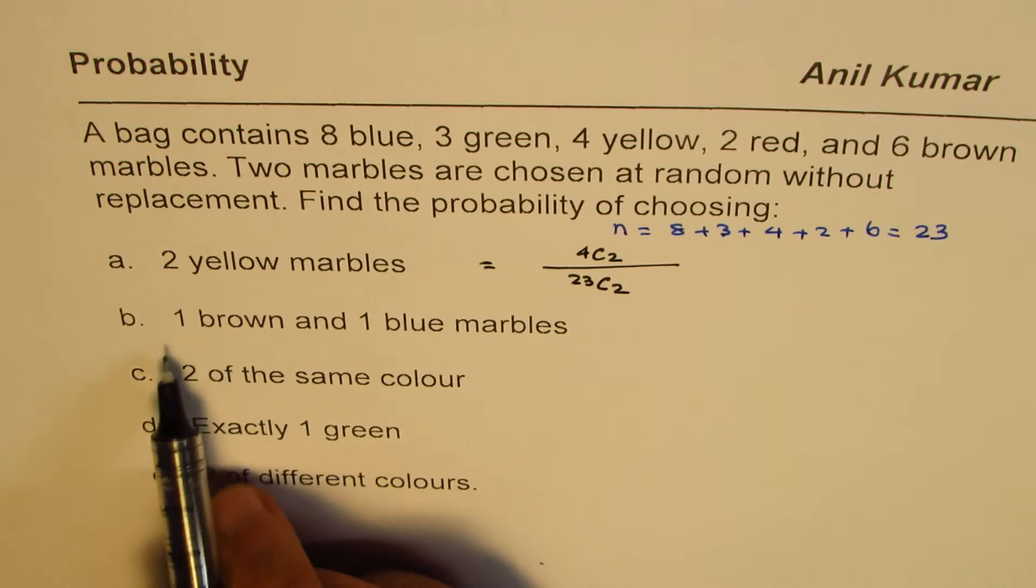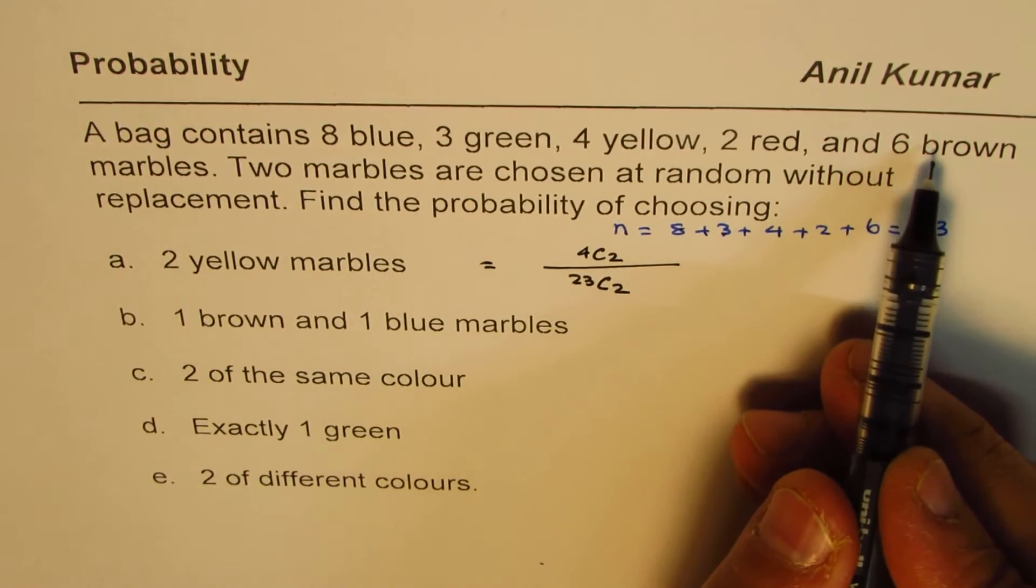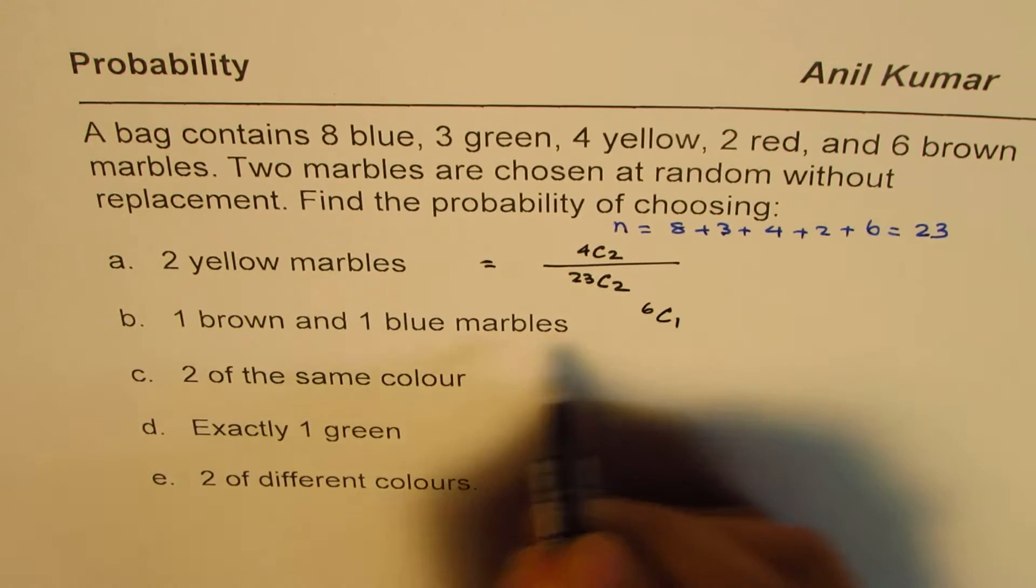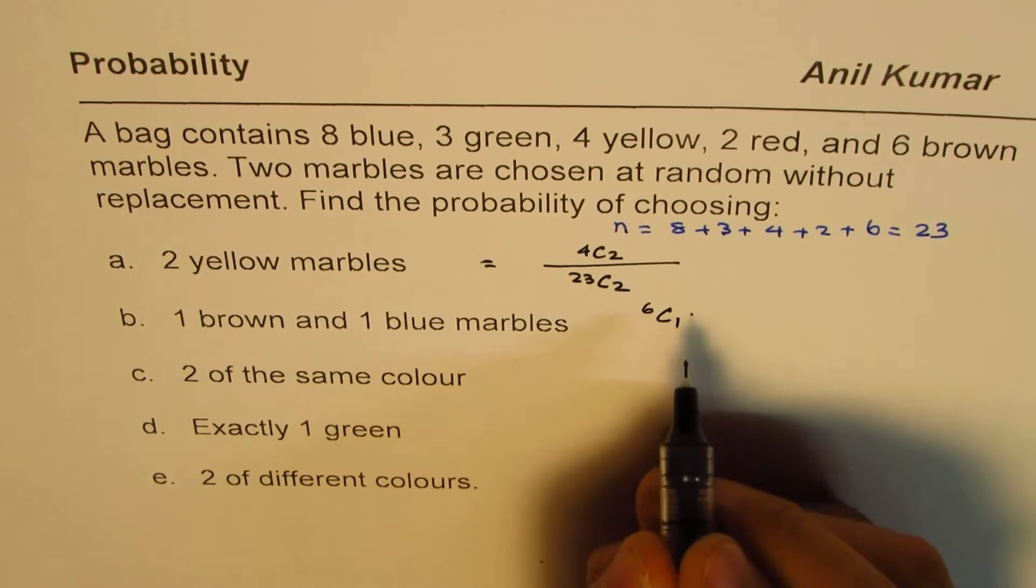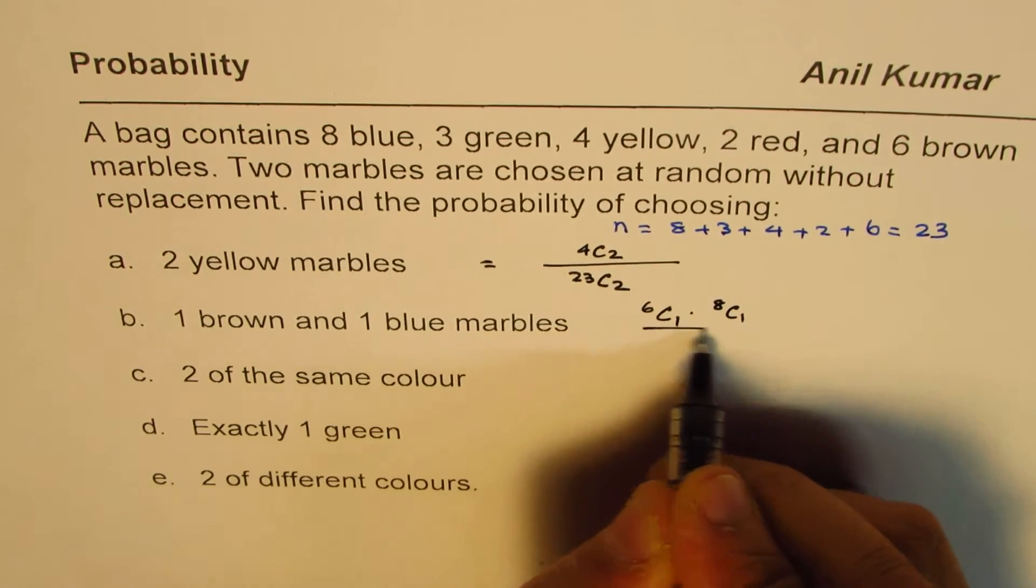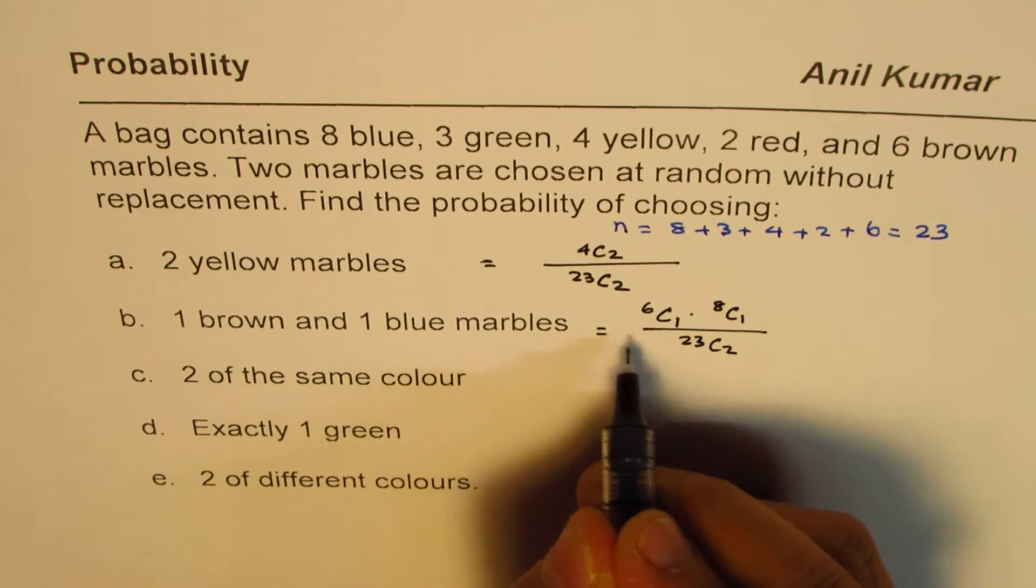Now, let's write down the answer for the second one. 1 brown, 1 blue. So 1 brown, there are 6 browns. So out of 6, we have 1 brown. And then 1 blue out of 8. So out of 8, 1 blue. Total number of combinations still 23C2. So that's the answer.